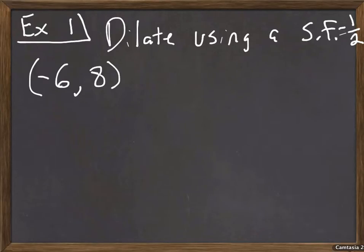Remember what we did before when we were talking about transformations, we just basically took our scale factor and times each coordinate, multiplied each coordinate by that scale factor. So when I do that, if I take negative six times one half my scale factor, I get negative three.